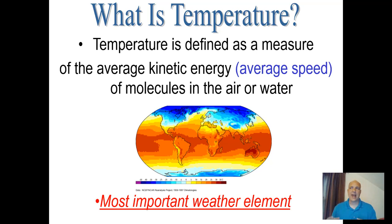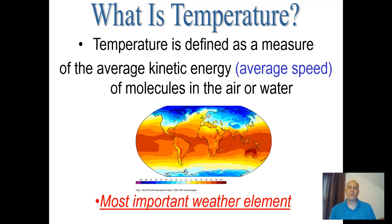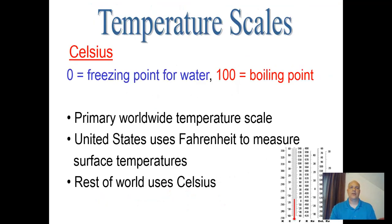If molecules are moving quickly, that results in a much higher temperature. If molecules are moving very slowly, that indicates a colder substance. So it's the average speed — the average kinetic energy — that determines the temperature of a substance. And temperature is the most important weather element.